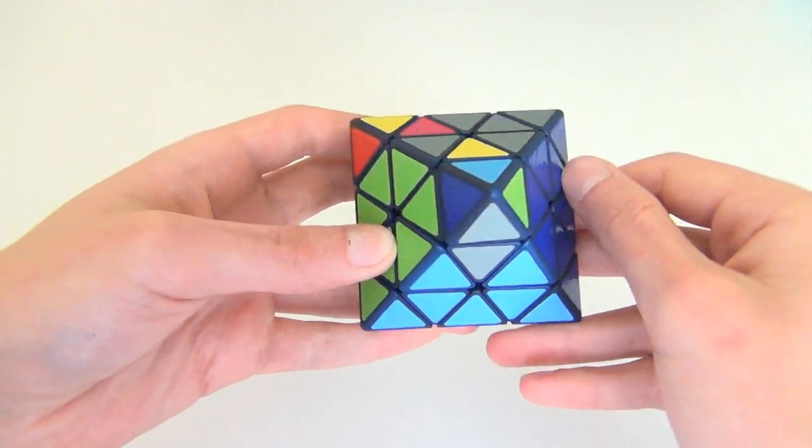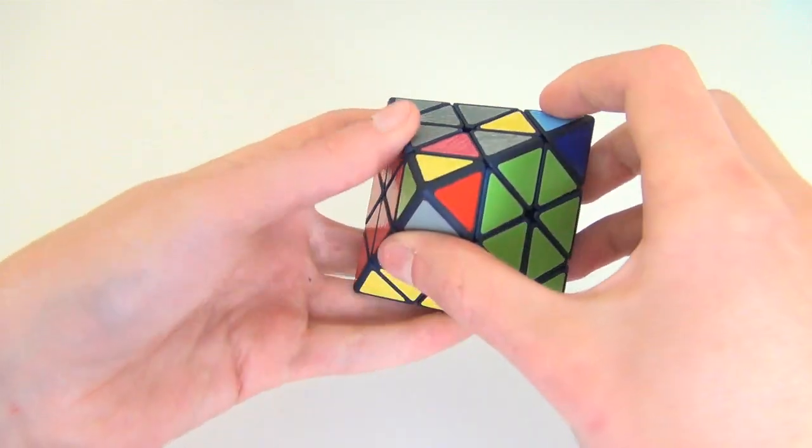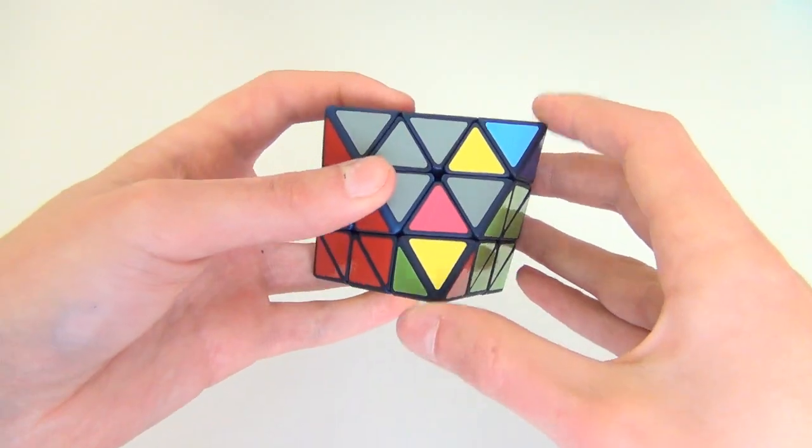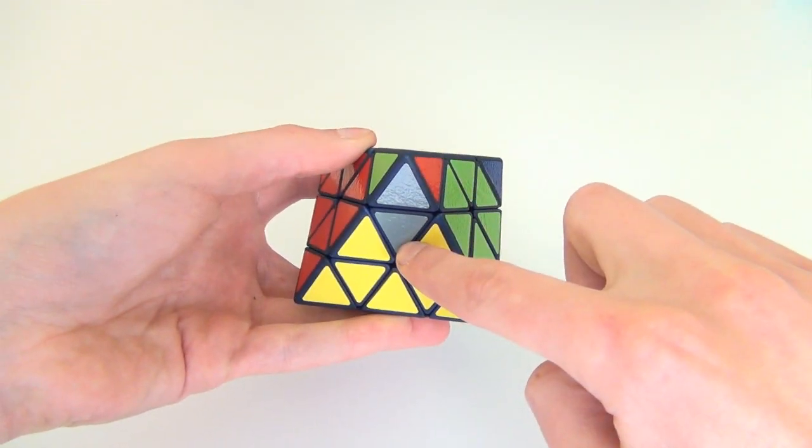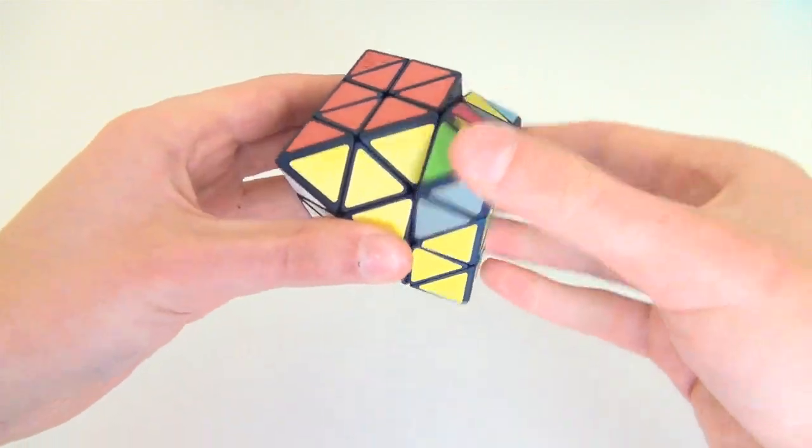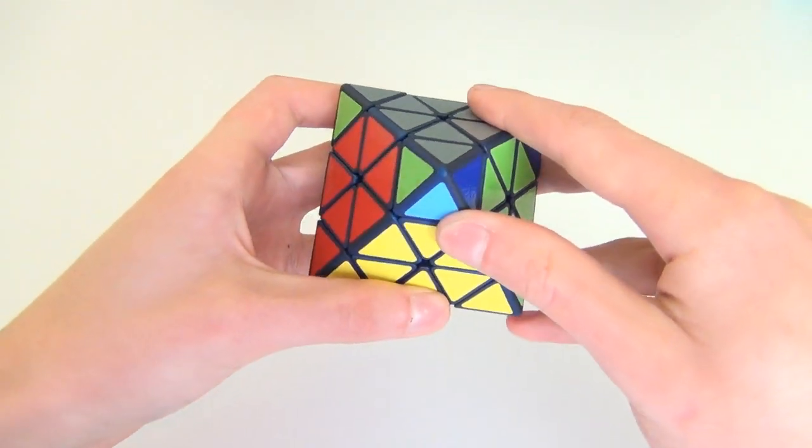Then we can do U' here, orient the puzzle like this. Now to solve our bottom triangles, we can see we're going to need to do the CW flip algorithm, so put yellow here. So we do that, we've got that done, and now the last thing to do is corner permutation.